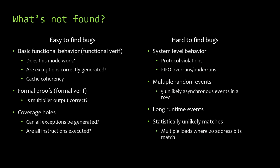What does verification fail at? Let's start with what it's good at. Verification is good at finding bugs with your basic functional behavior — does this particular mode of operation work, do these exceptions happen when they're supposed to? Anything you can do formal proofs for is also good. And it's useful for coverage analysis — are all your instructions executed, are they executed in all the different modes, do you get all the different exceptions?